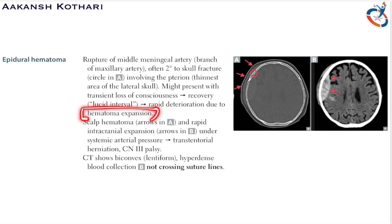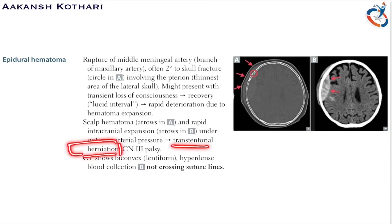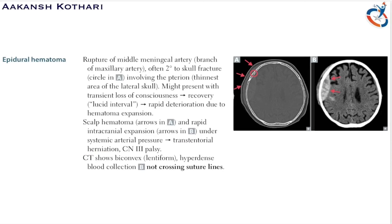Epidural hematoma involves rapid intracranial expansion under systemic arterial pressure. When there is excessive pressure, the hematoma expands in the skull, causing transtentorial herniation with cranial nerve 3 palsy — that is, oculomotor palsy. Epidural hematomas are classically associated with cranial nerve 3 palsy and transtentorial herniation.